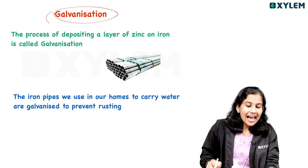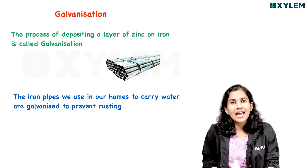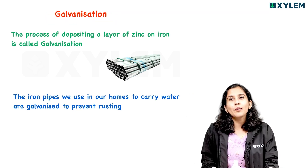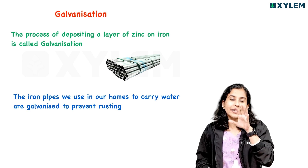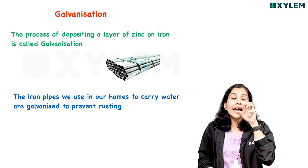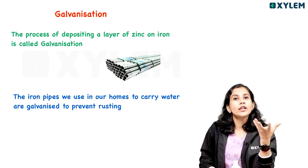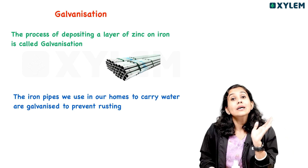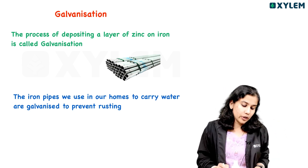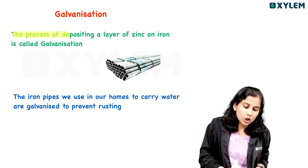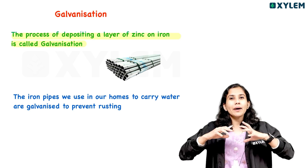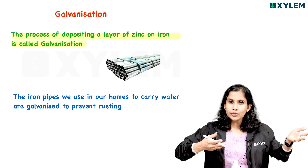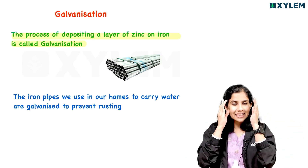This process is called galvanization — the process of depositing a layer of zinc on an iron object to prevent rusting.